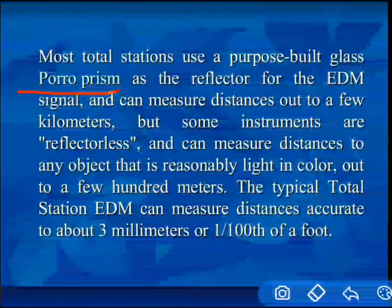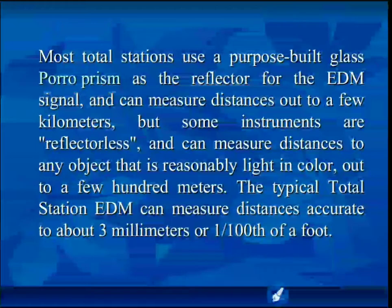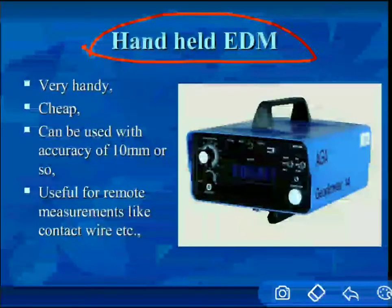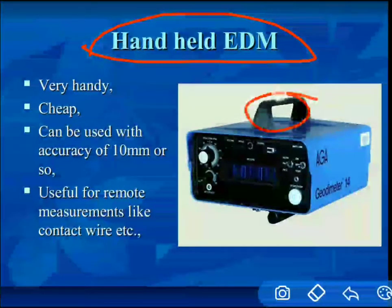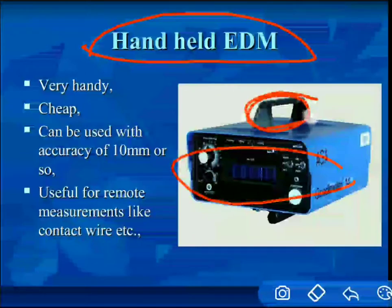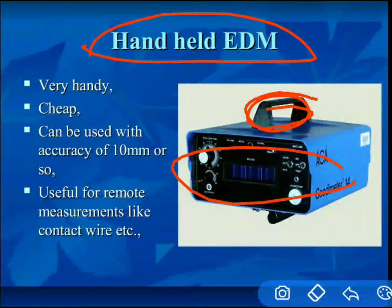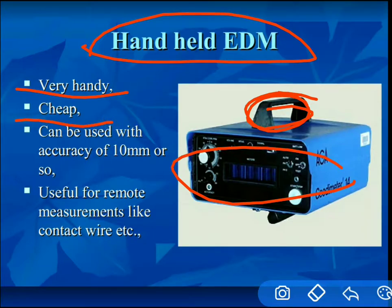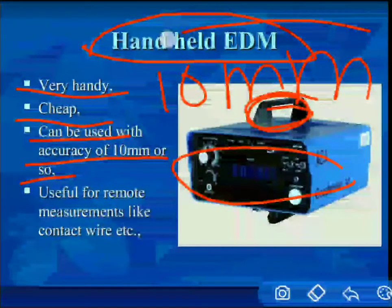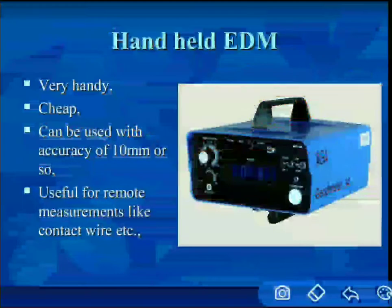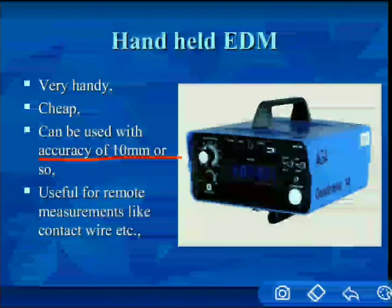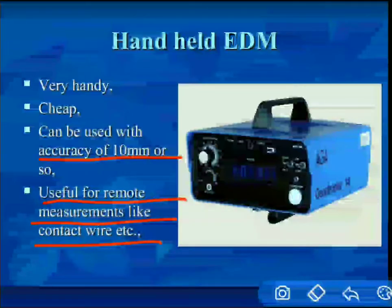Nowadays we send only microwaves and infrared carrier signals. For this we use a paro prism or prism rod as a reflector. This is the handheld EDM — very handy, can be taken from one place to another. It is very cheap and can be used with an accuracy of 10 mm. It is useful for remote measurements.